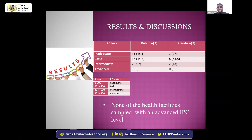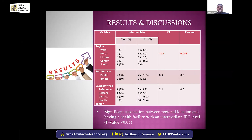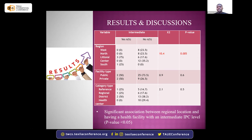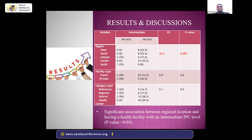Chi-square analysis showed a statistically significant association between regional location and having a health facility with an intermediate IPC level—the highest level observed. However, this finding is treated cautiously given the small sample size. It may partly reflect regional development disparities within Cameroon, and the association neither confirmed nor ruled out by the current data.